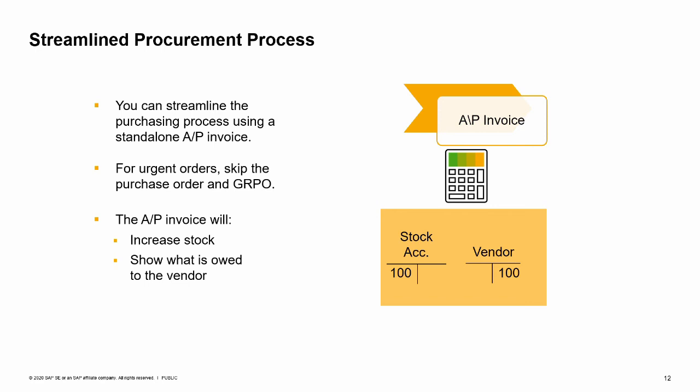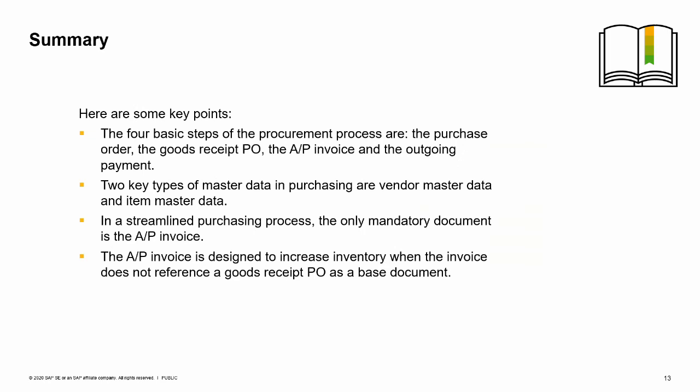The four basic steps of the procurement process are the purchase order, the goods receipt PO, the AP invoice, and the outgoing payment. Two key types of master data in purchasing are vendor master data and item master data.